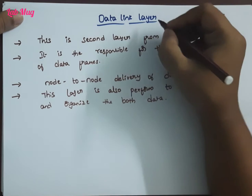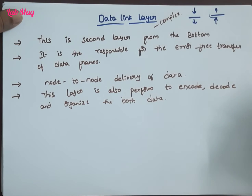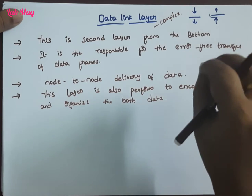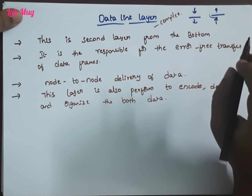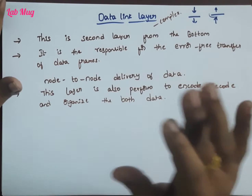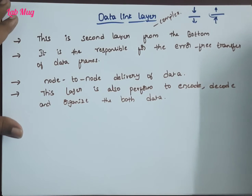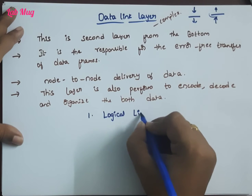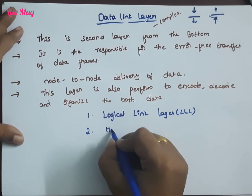This layer performs reliable and efficient communication. Through this layer, we know the two sub-layers. The first is the Logical Link Control layer, shortcut LLC. The second sub-layer is the Media Access Control layer, shortcut MAC.